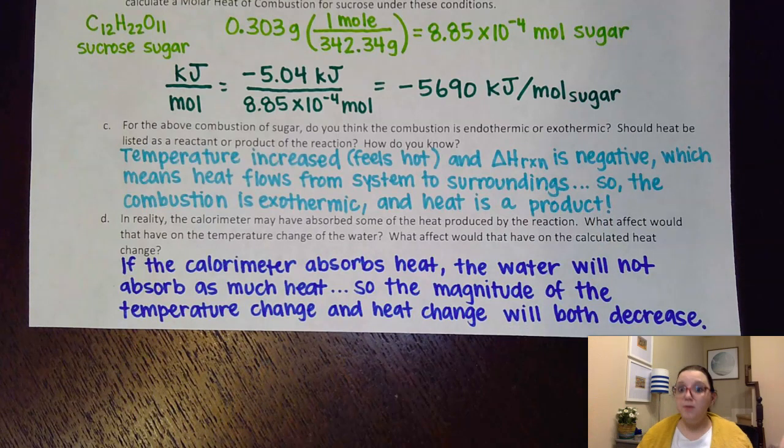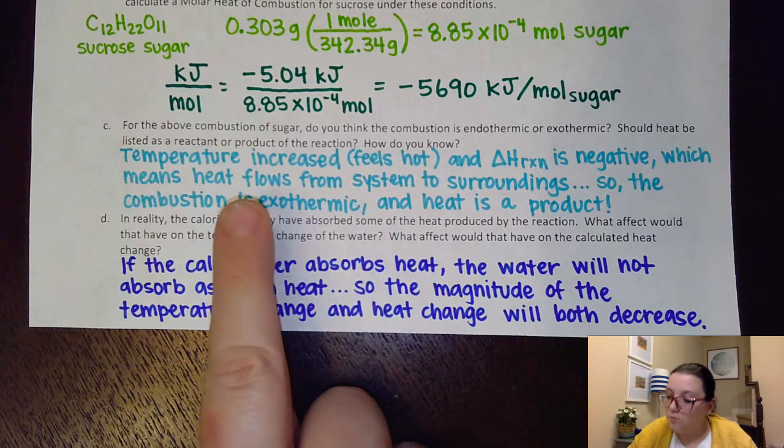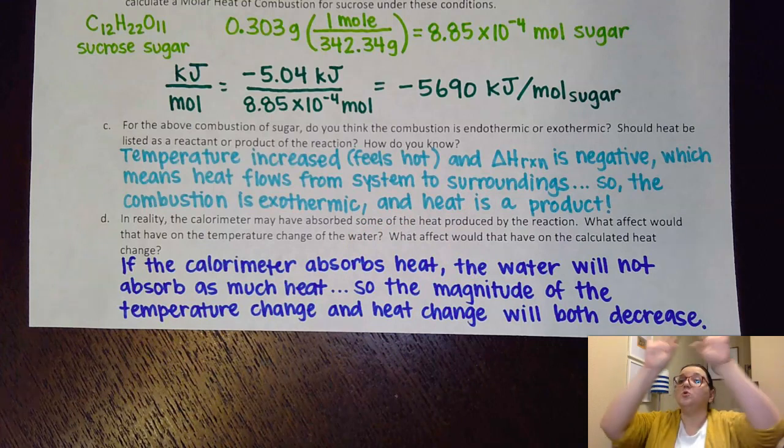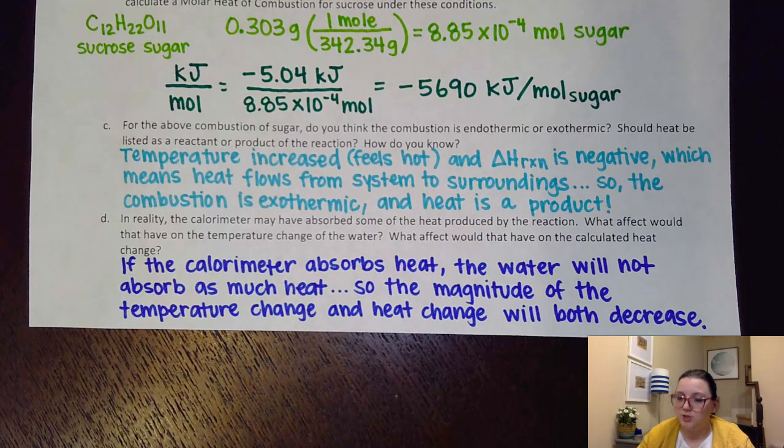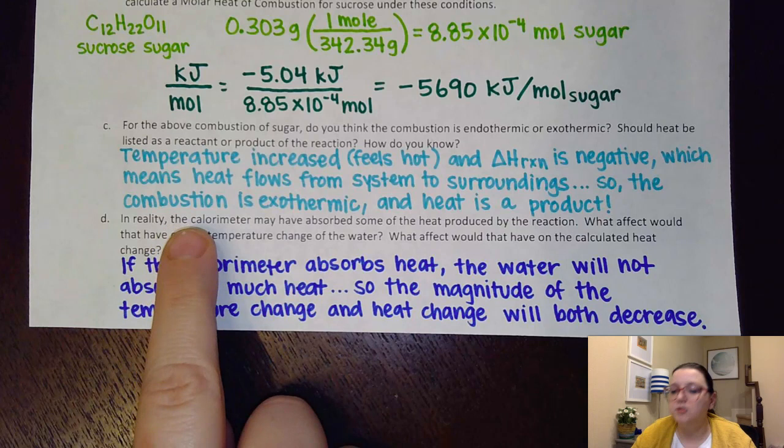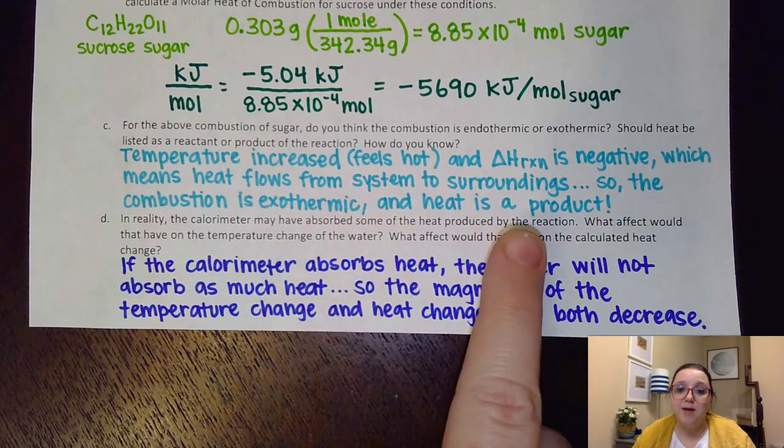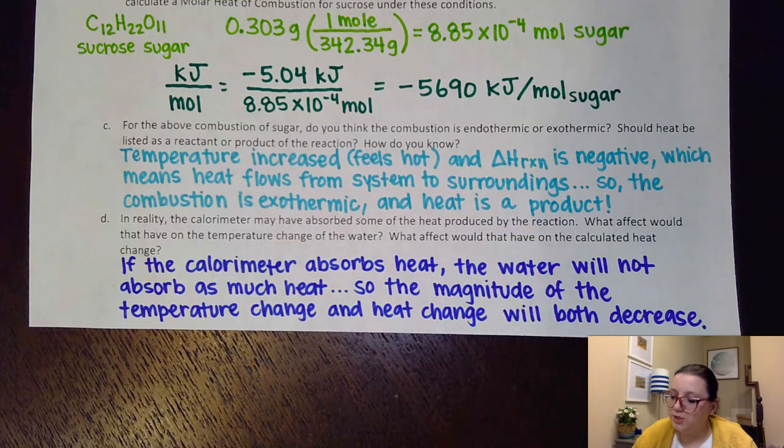So, what that all means is that heat flows from the system to the surroundings. I'm flowing from the reaction to the water surrounding the reaction. So, our combustion is exothermic here. And, of course, if it's exothermic, then that means heat is a product.